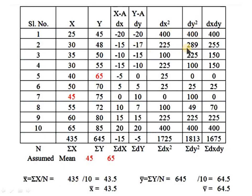For dy², the values are: 0²=0, 0²=0, 0²=0, 0²=0, 5²=25, 10²=100, 7²=49, 15²=225, 20²=400 — giving Σdy² equals 1813. For dx·dy: (−20)(−20)=400, (−15)(−17)=255, (−10)(−15)=150, (−15)(−10)=150, (−5)(0)=0, (5)(5)=25, (0)(10)=0, (10)(7)=70, (15)(15)=225, (20)(20)=400 — giving Σdx·dy equals 1675.